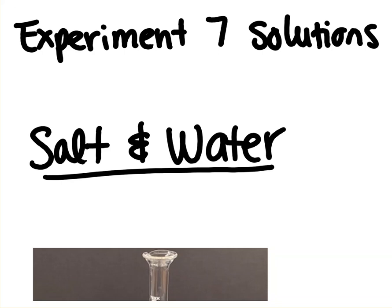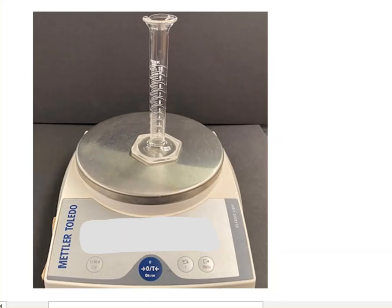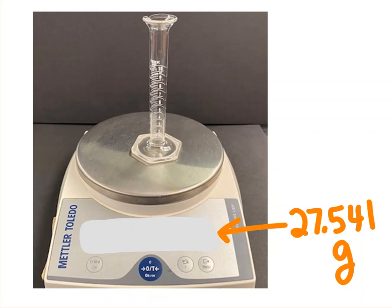We're going to start by weighing our clean, dry 10 milliliter graduated cylinder. We're going to read off a number for it on our balance. It's 27.541 grams. On your report sheet, number two and three are things that you need to calculate. There's an example in the notes.